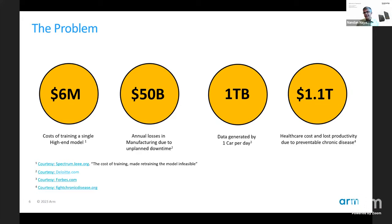The estimate is about $1.1 trillion lost due to preventable issues — specifically, productivity lost from people not showing up for work due to preventable and chronic health issues. So the problems are pretty big and growing, and AI has solutions for them, but it needs to scale to support that.